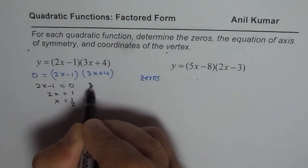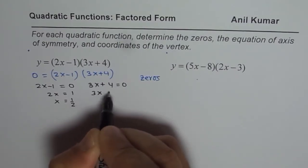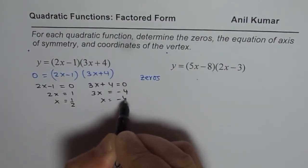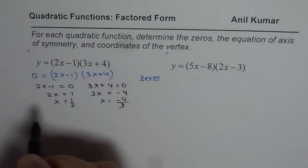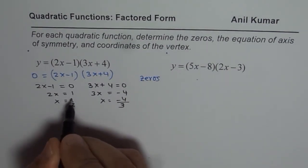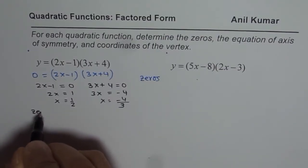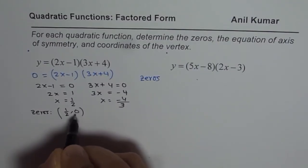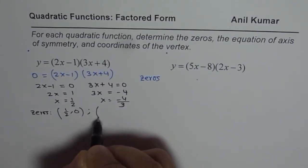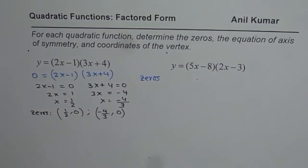The other factor here is 3x plus 4. We equate that to 0, so we get 3x equals to minus 4, or x equals to minus 4 over 3. So that becomes the second zero. The zeros are at x equals to one half and x equals to minus 4 over 3. We can write these as the coordinate points (1/2, 0) and (-4/3, 0).